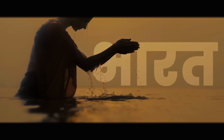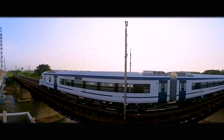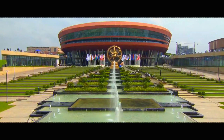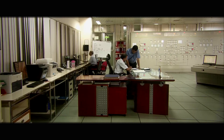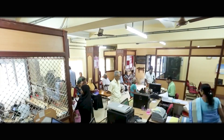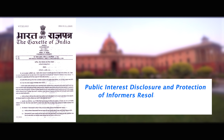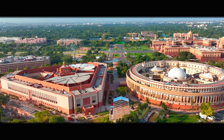Today, our country India is taking rapid strides towards becoming a developed nation. In order to achieve the goal of becoming a developed nation, it is essential to have honesty and transparency in government functioning. To combat and remove corruption from government departments, the Public Interest Disclosure and Protection of Informers Resolution 2004, or PIDP Resolution in short, is an important initiative of the Government of India.